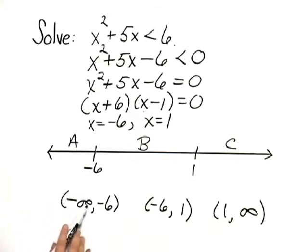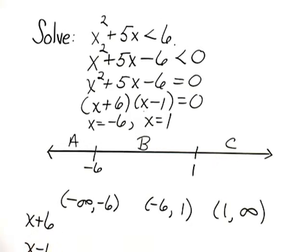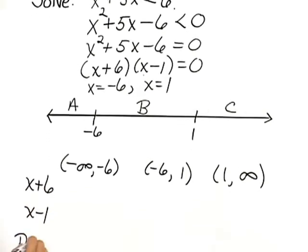Instead of thinking of x squared plus 5x minus 6, let's think of the factored form x plus 6 times x minus 1. Because when we do that, we can really just look at the signs of those factors. And then we'll look at the sign of the product.